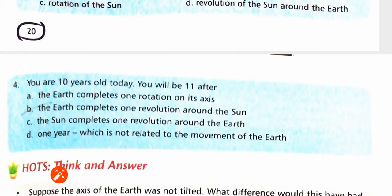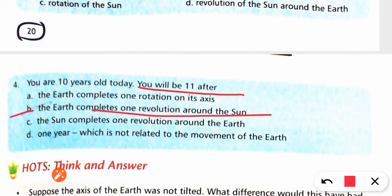You are 10 years old today. You will be 11 after the earth completes one revolution around the sun, because it takes one year. I hope this much is very clear. If you have any doubt, any problem, do write in comment section. Thank you.